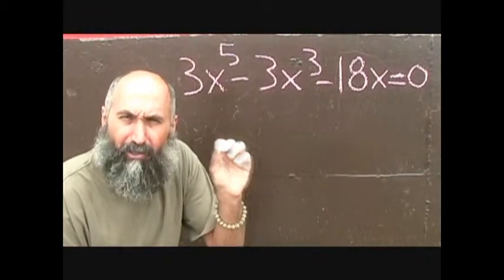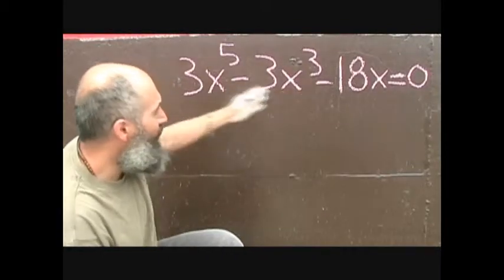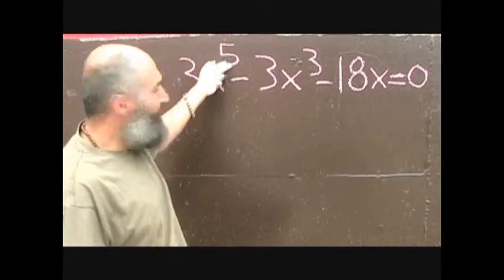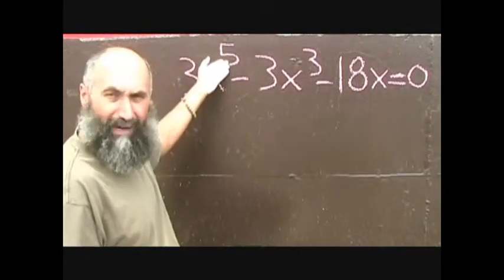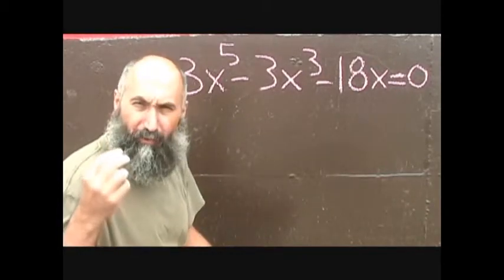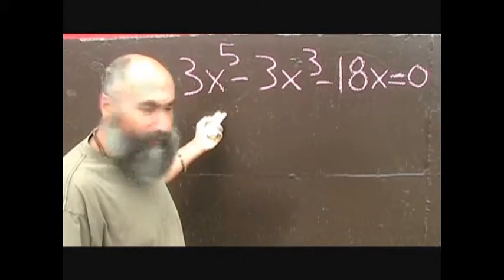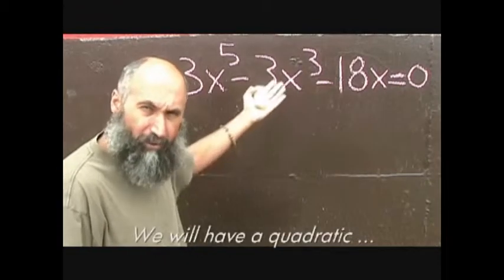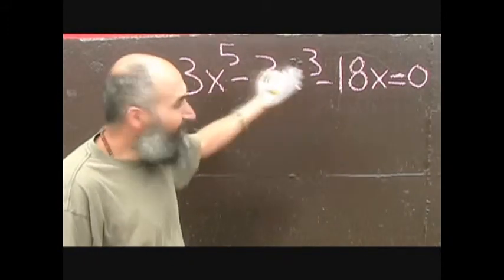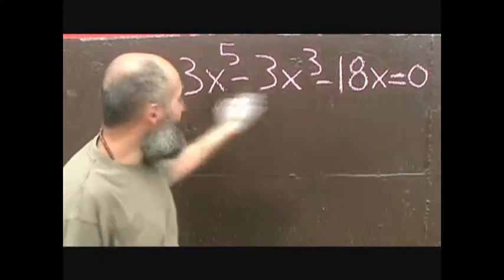Let's do a problem combining GCF and simple trinomial factoring. This problem can't be factored as a simple trinomial directly because simple trinomial factoring requires the higher power to be exactly double the lower power. So we're going to take out a GCF first — always look for a GCF with every type of equation. We have 3, 3, and 18, so we can take out 3. We also have x to the power of 5, x cubed, and x, so we can take out x. That gives us 3x as the GCF.